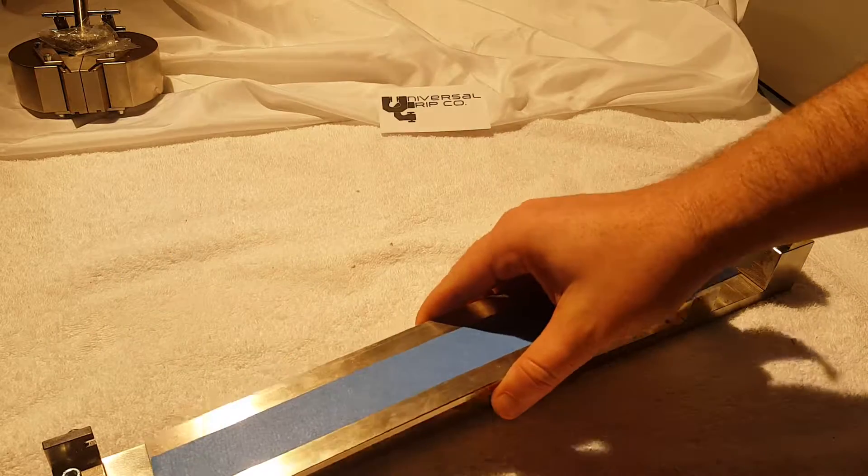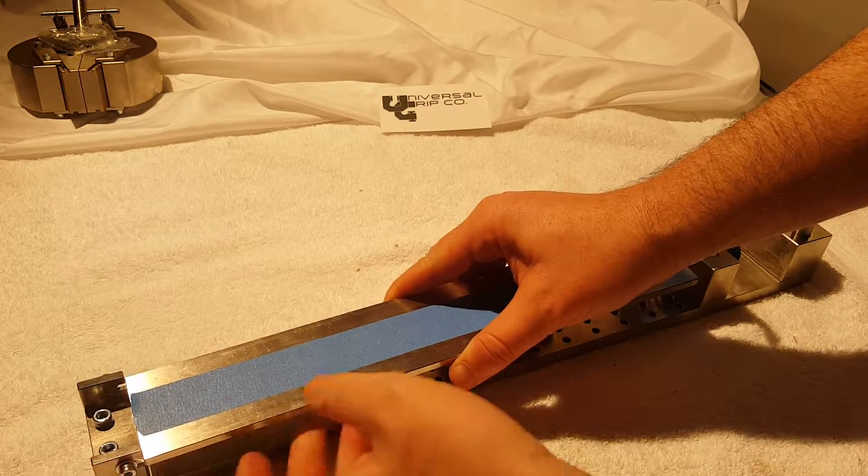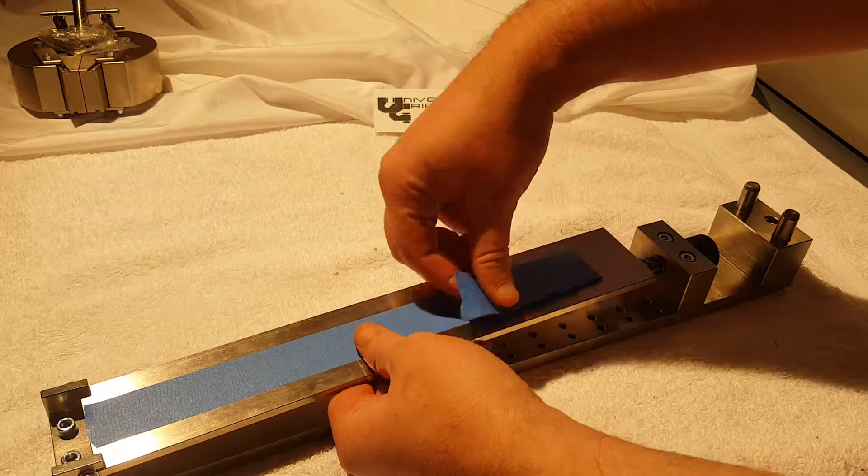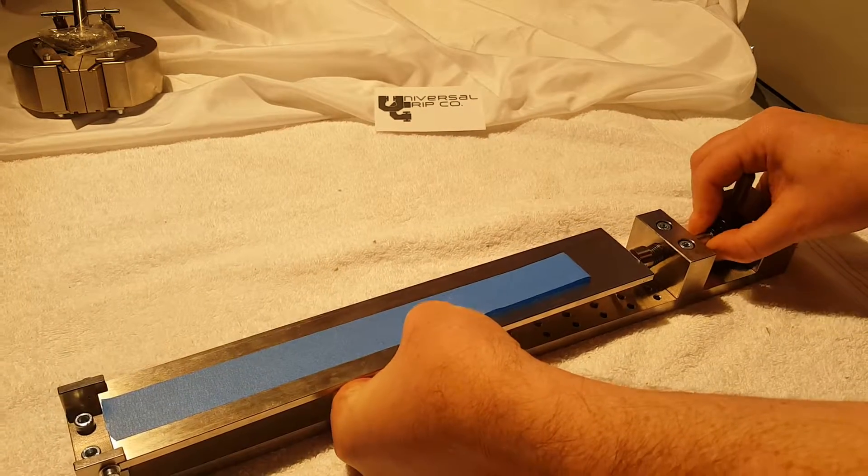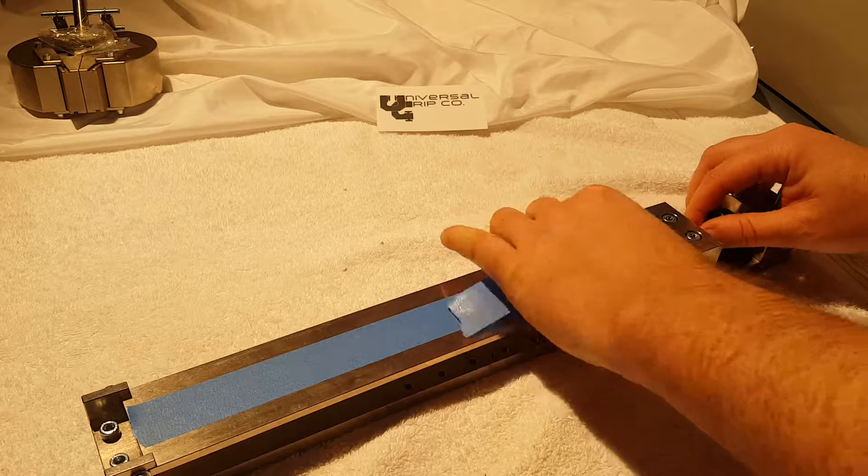Now this plate loads into the fixture. There's a little notch at the end here, and then this spring pulls back. You pull this back and notch it into place just like that.